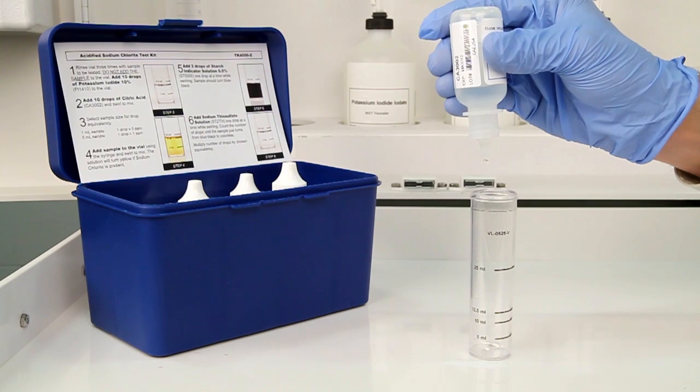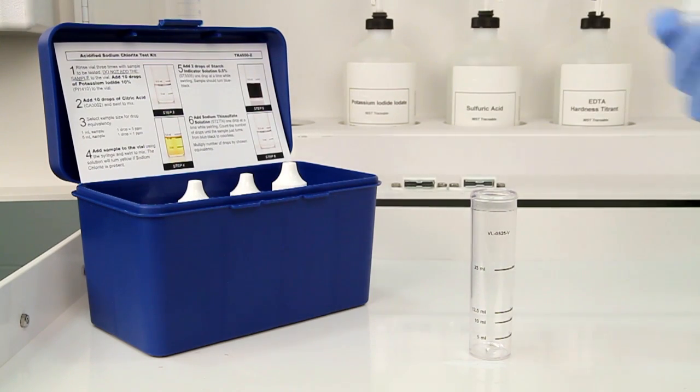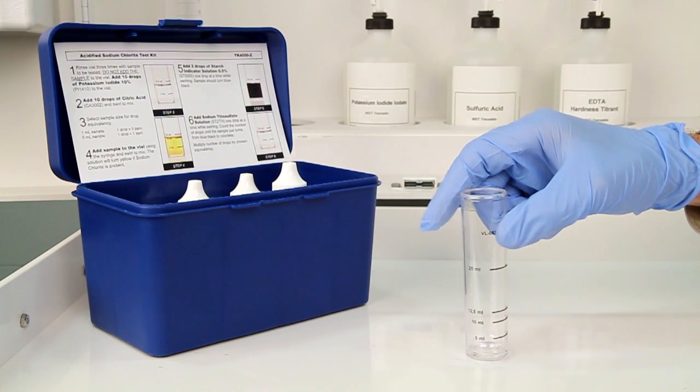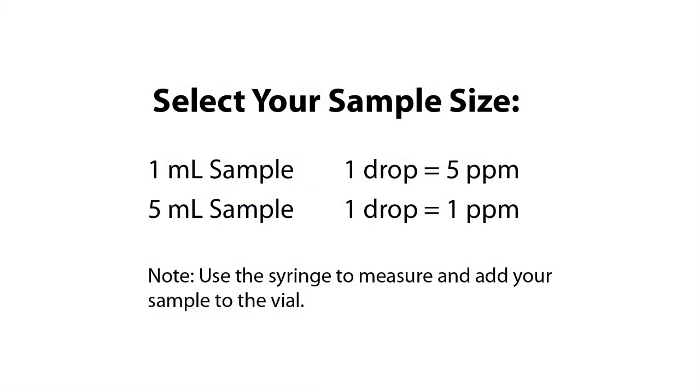After the addition of each reagent, swirl the vial to make sure the reagents are properly mixed. The next step is to choose your sample size based on your desired drop equivalency.